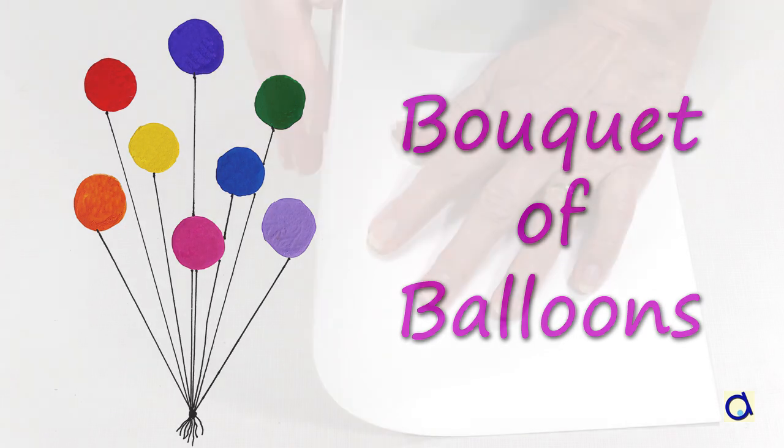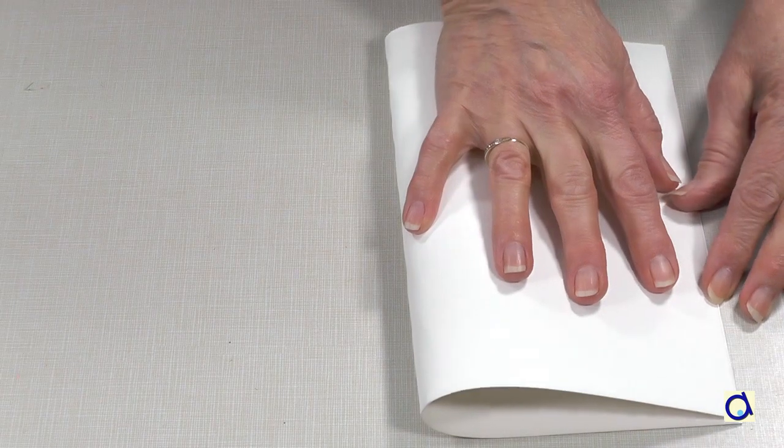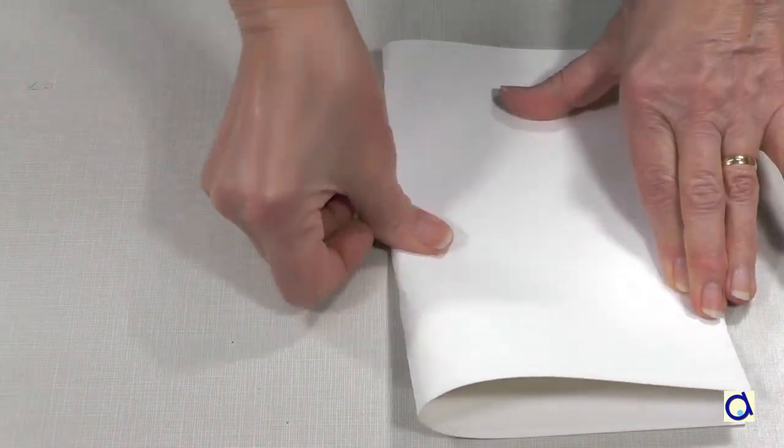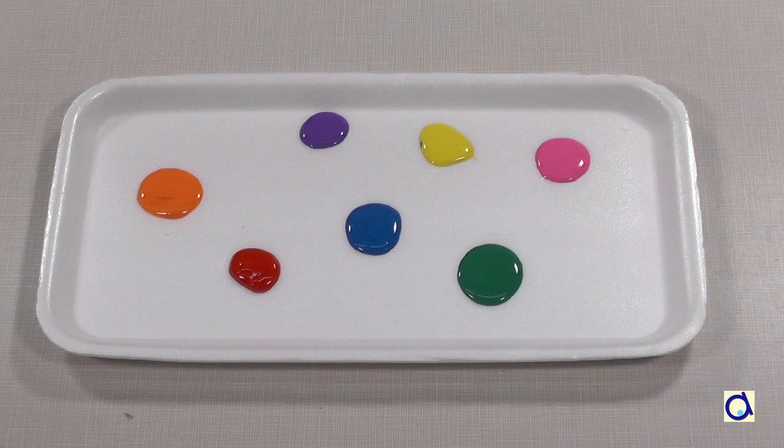Cork painting allows even young children to create beautiful projects. Take a sheet of cardstock and fold it in half to make a card. Prepare an assortment of colours to paint the balloons in different colours.